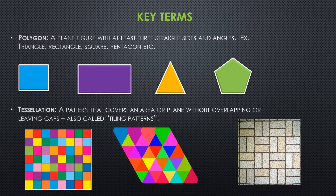Some key terms for today's lesson. If you remember from last year, a polygon is a plain figure with at least three straight sides and angles. Examples include a square, a rectangle, a triangle with three straight sides, or even a pentagon. All of these are polygons because they have those straight sides and angles in between.